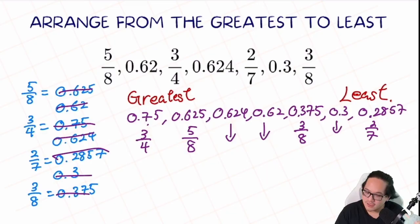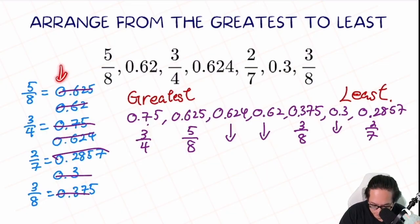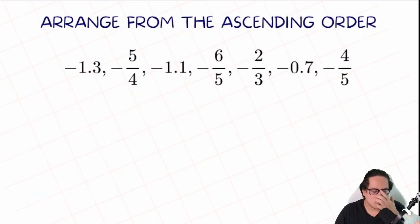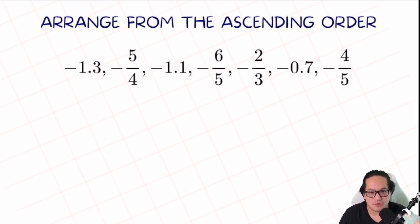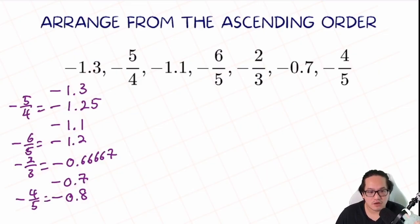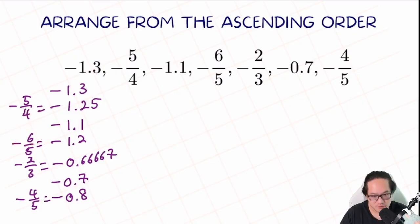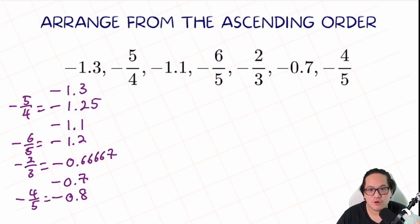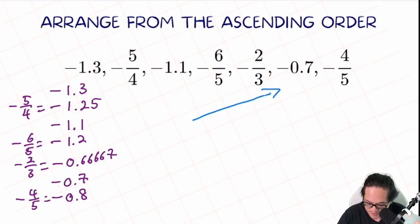Super easy — all you need is to type into your calculator to convert all fractions to decimals, then compare unit by unit. Let's try another one. This next problem has some negative numbers: negative 1.3, negative 5/4, and so on. Let's convert all of them to decimal first. The question wants us to arrange them in ascending order, which means from the smallest to the largest.